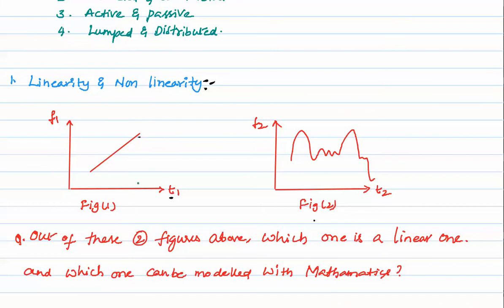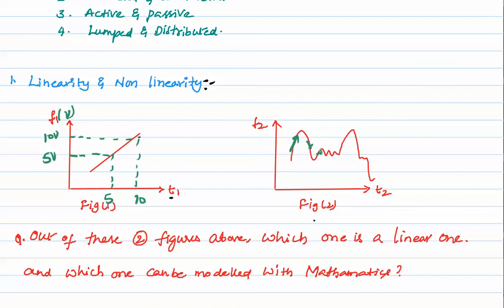f2 is another function, with times t1 and t2 respectively. For example, for 5 seconds function f1 is 5 volts, and for 10 seconds it is 10 volts. You can predict this because it is going to be linear. But for function f2 you cannot predict, because it is rising and falling repeatedly.